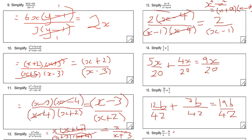This next one: find the lowest common multiple of 6 and 9, which is 18. Multiply the first fraction top and bottom by 3 to get 15z. Multiply the second fraction top and bottom by 2 to get 8z. Then 15z minus 8z gives 7z, so the answer is 7z over 18.